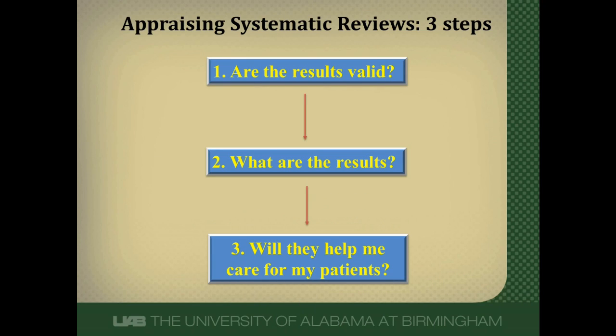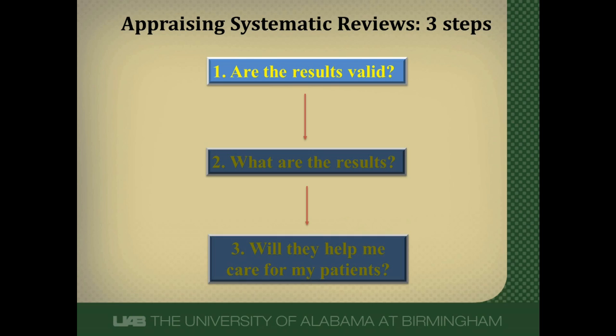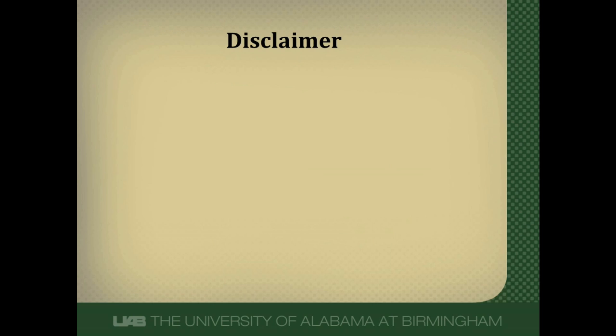Critically appraising a systematic review requires three steps: one, to determine if the results are valid; two, to determine what the results are; and three, to determine if the results will help you care for your patient. In this video, we're going to focus on determining if the results are valid.